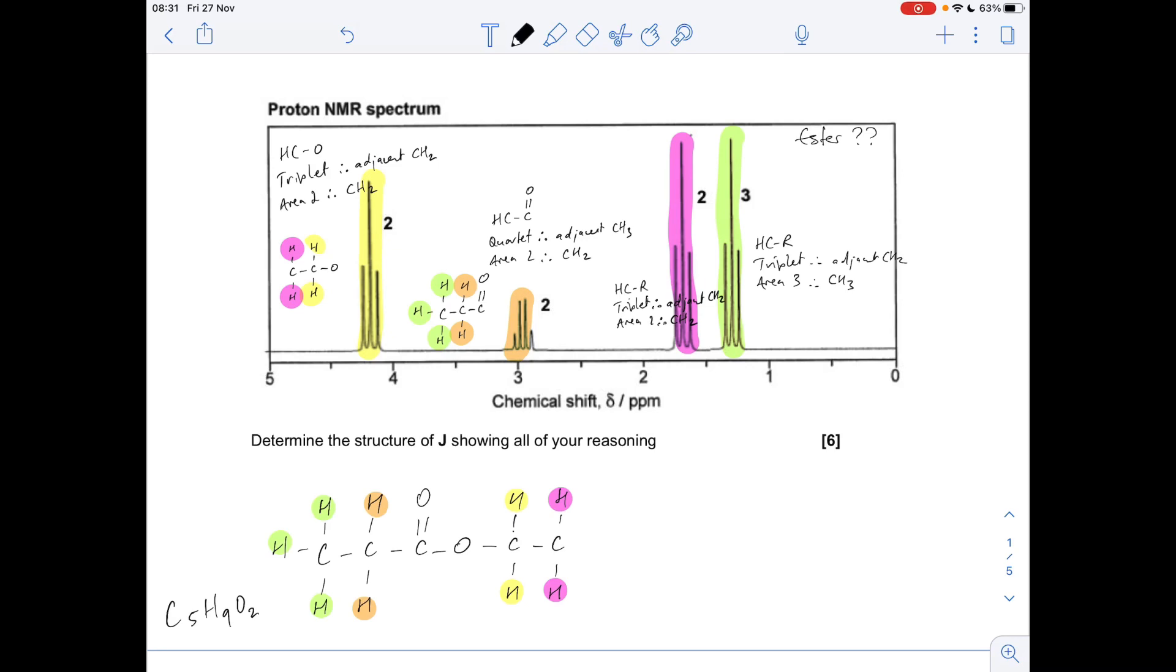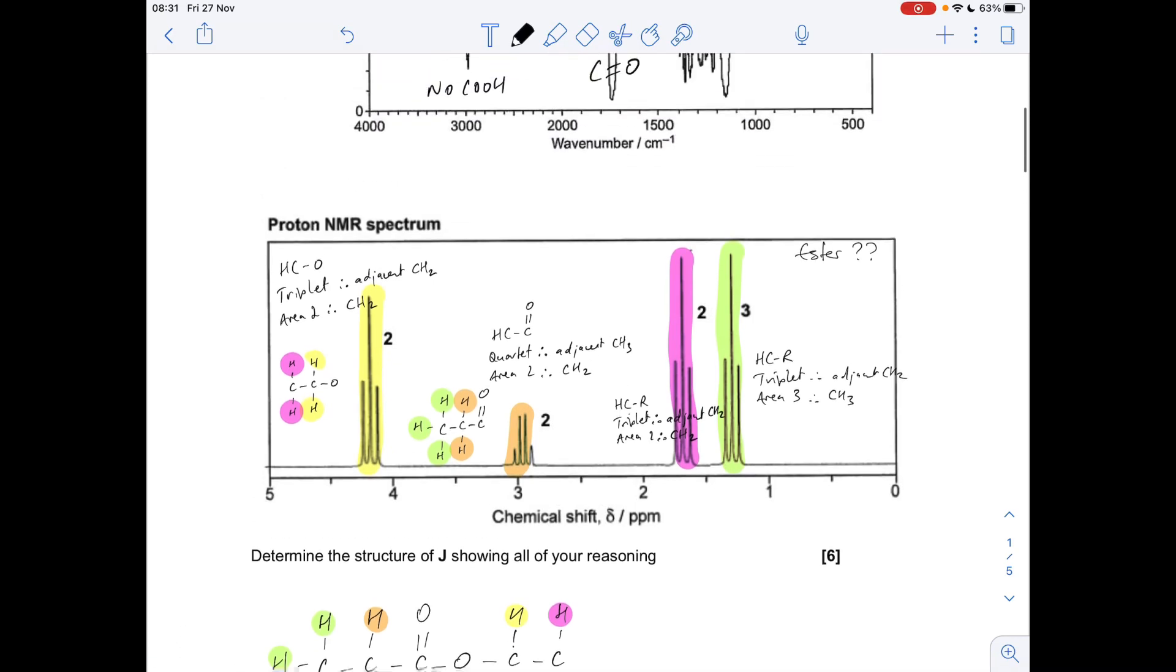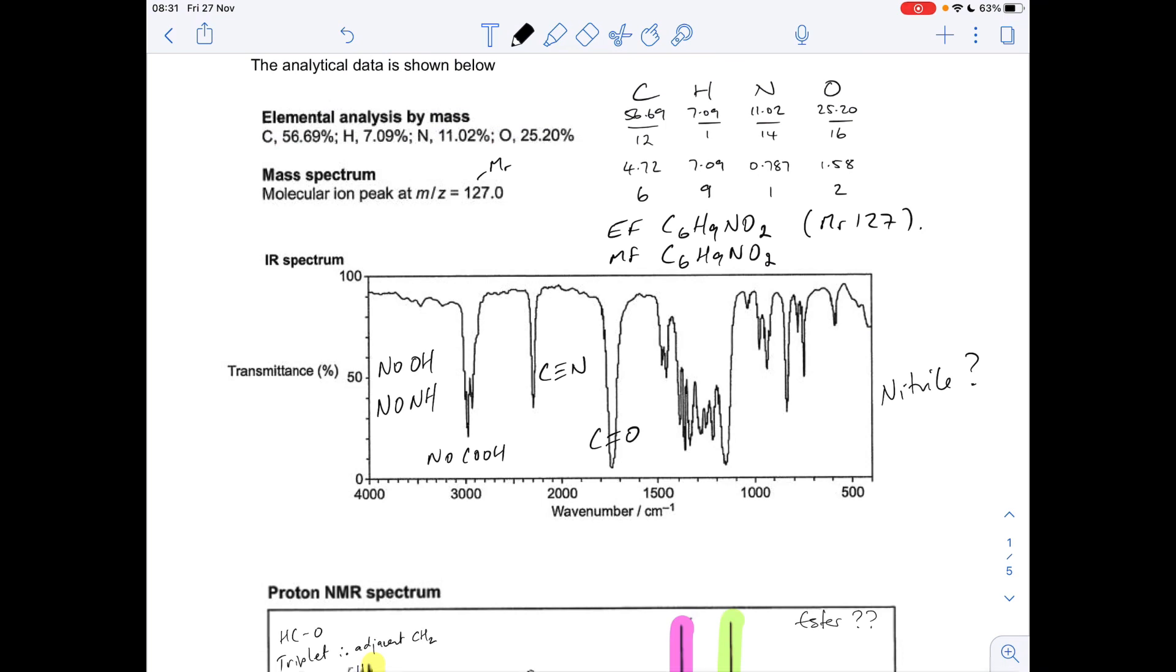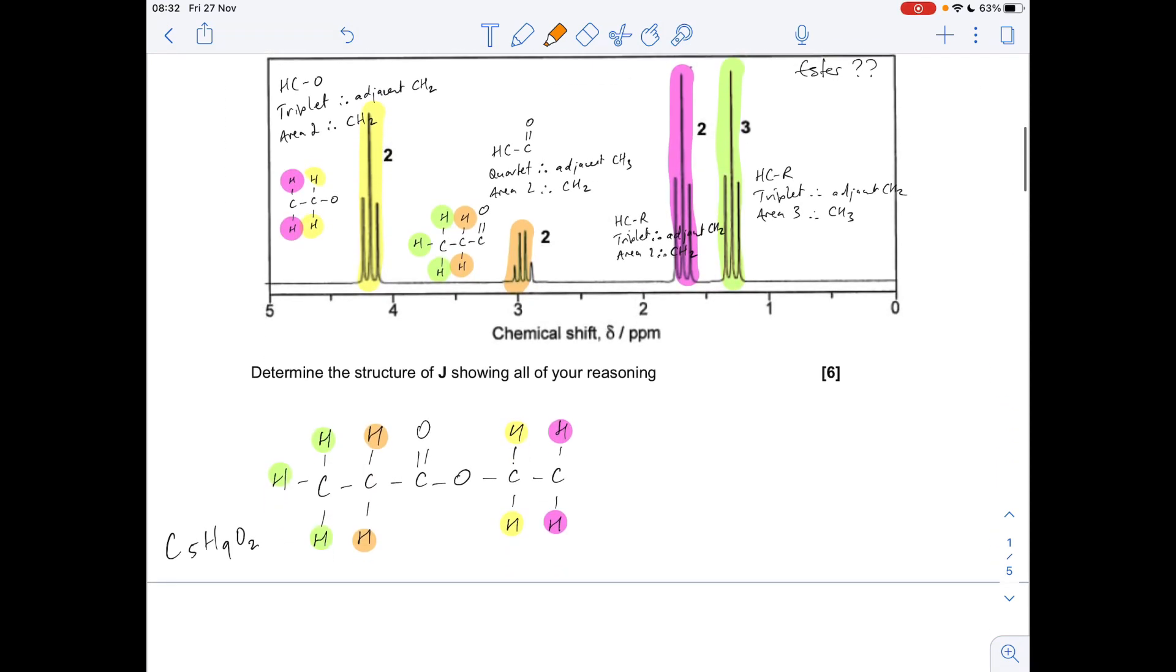If we go to the molecular formula, we're a carbon down and a nitrogen down. But we did say we've got this signal here in the infrared spectrum that's due to a CN. It looks like that's the molecule, and that is the answer.